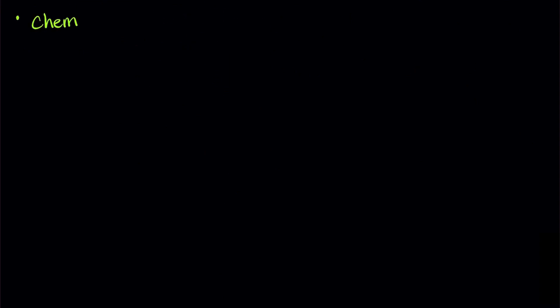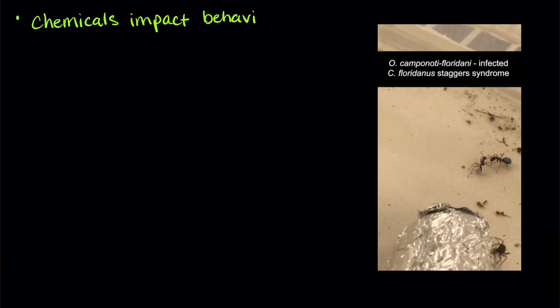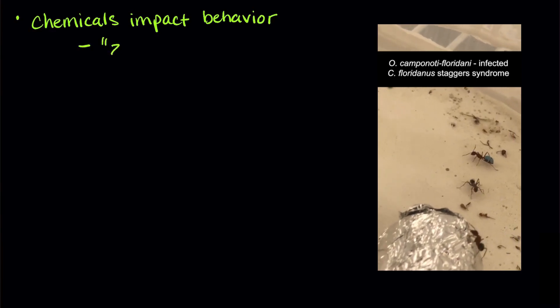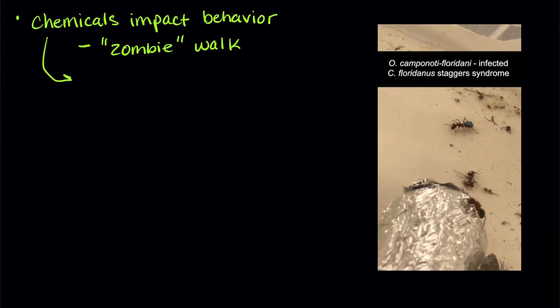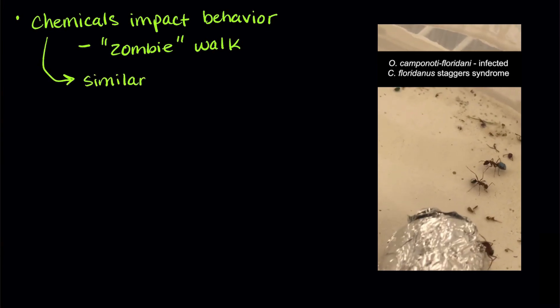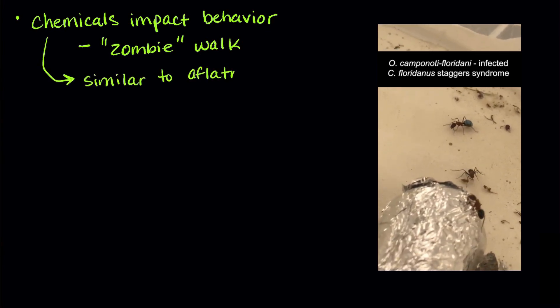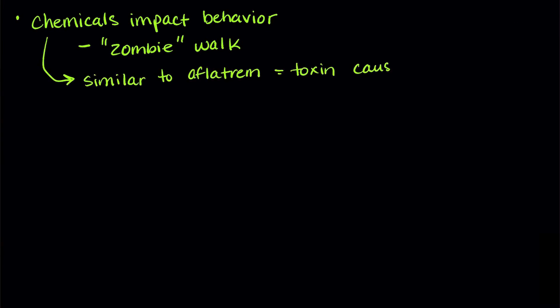The chemicals this fungus releases into the ant can also have impacts on normal behaviors, like walking. Ants start to have trouble walking when they get infected, just like zombies do in the movies. One of the chemicals this fungus releases is similar to a chemical we call afflatrem. It's a toxin that causes shaking and poor coordination.